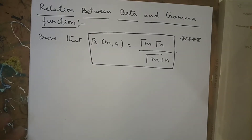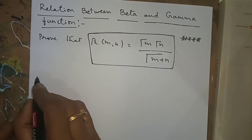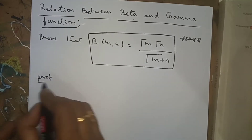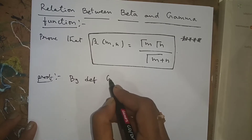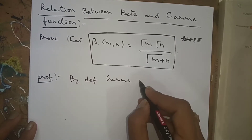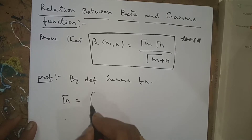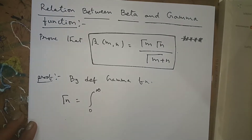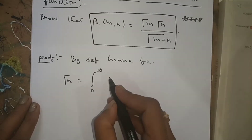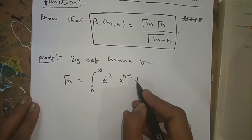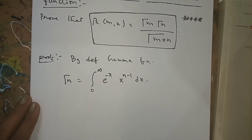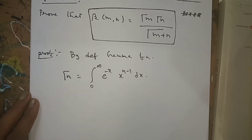To prove this relation between the Beta and Gamma functions, we start from the definition of the Gamma function. By definition, Γ(n) = ∫₀^∞ e^(−x) · x^(n−1) dx. This is the Gamma function formula.